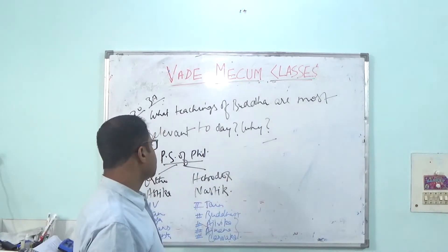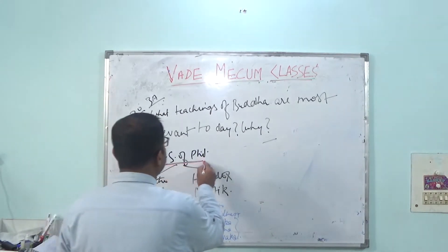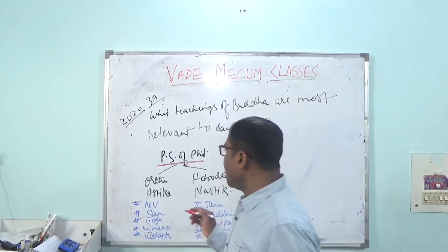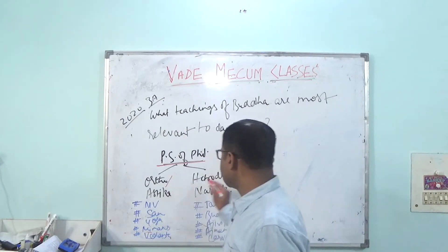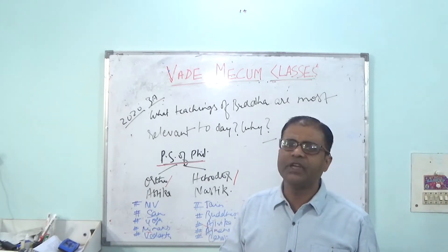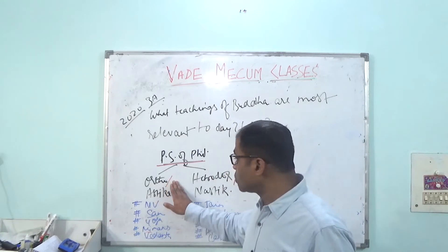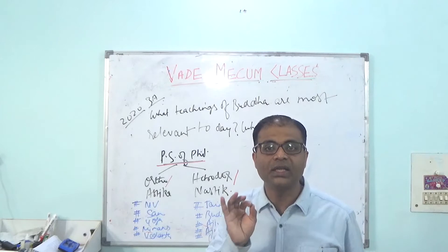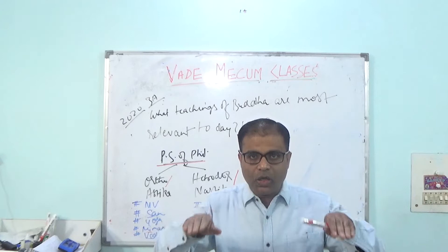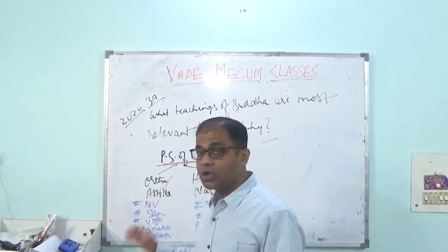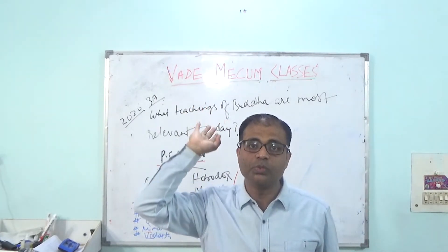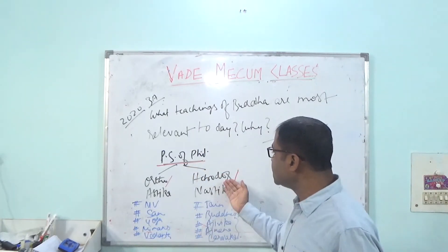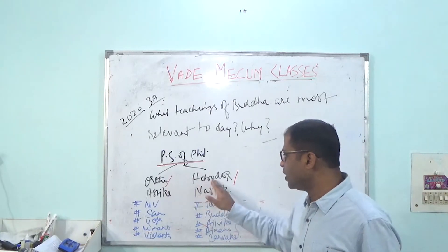Before getting into that question, we would discuss that there are different schools of philosophy. The main schools of philosophy are basically divided into two parts: orthodox and heterodox. In common parlance, we understand orthodox in a very different manner, but here orthodox means something different. The orthodox school of philosophy is also called Astika.